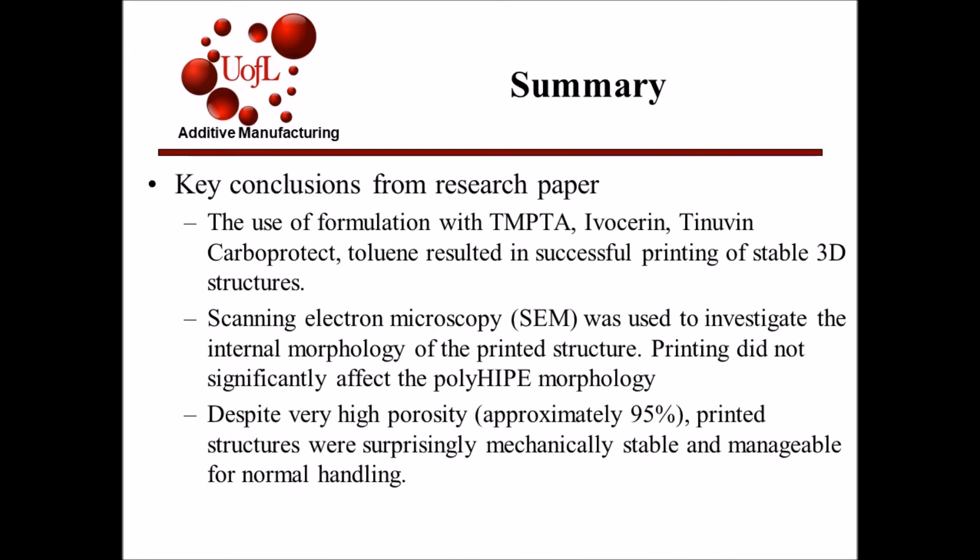For the summary, the use of the formulation with TMPTA, Ivocerine, Tinuvin Carboprotect, and toluene resulted in a successful printing of stable 3D structures. After the internal morphology of the printed structures was scanned, it was found that the printing did not significantly affect the polyHIPE morphology. The final part produced porosities of approximately 95% but were found to be surprisingly mechanically stable and manageable for normal handling.